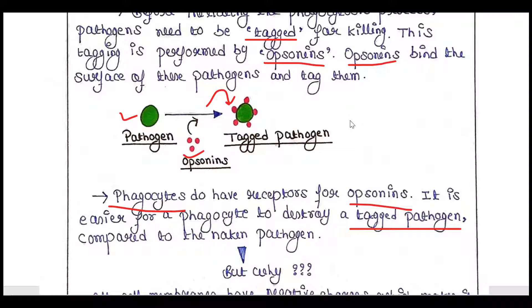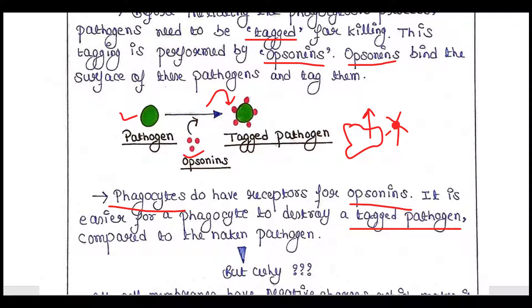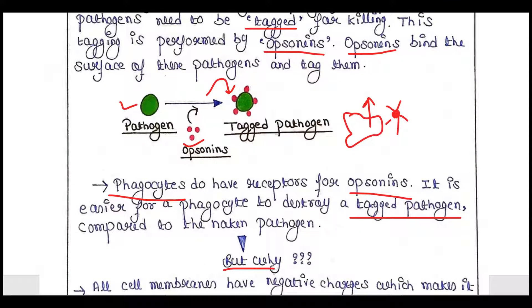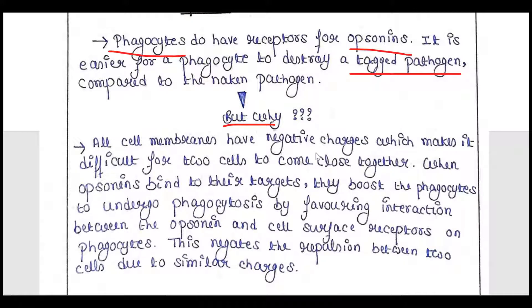Suppose phagocytes are roaming and encounter a pathogen that is not tagged by opsonins — it is difficult for phagocytic cells to detect and kill that pathogen. Whereas when the pathogen is tagged by opsonins, it is easier for phagocytes to detect and kill it.